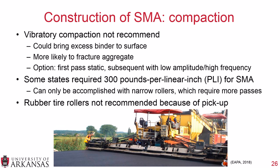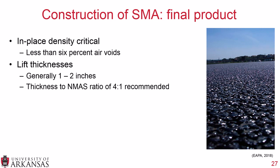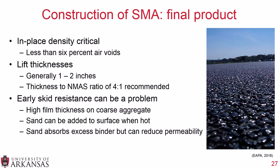For the final product, in-place density is absolutely critical — you want less than 6% air voids, because once cooled you won't get much additional compaction from traffic. Lift thicknesses are generally 1 to 2 inches, relatively thin, and a thickness-to-nominal maximum aggregate size ratio of 4 to 1 is recommended for best performance. On a freshly placed mat there can be some early skid resistance issues due to the relatively high film thickness on the coarse aggregate. If needed, a very light sprinkling of sand can absorb the excess binder, but don't add too much as it can reduce permeability and fill voids.